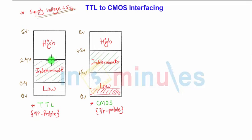Somehow we have to correlate 2.4 volts to 3.5 volts. Whenever there is a TTL output of 2.4 volts, it should be given to the CMOS as 3.5 volts. So we have to boost up the voltage by some procedure.